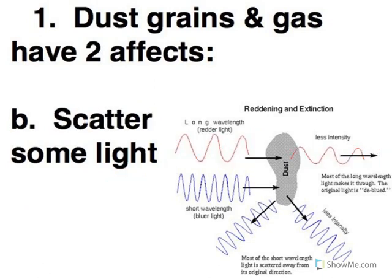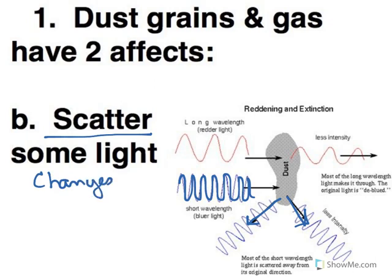The other thing that dust grains can do is they can scatter the light, and that's what's shown here with our blue light. So the blue light's coming in, hits the dust grain. Well some of it gets bounced off in different directions and that's called scattering, which is going to have two effects. That's going to change the brightness and the color because you're losing some of the wavelengths of light, so that changes the color that we see.